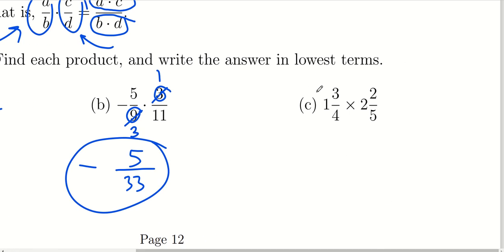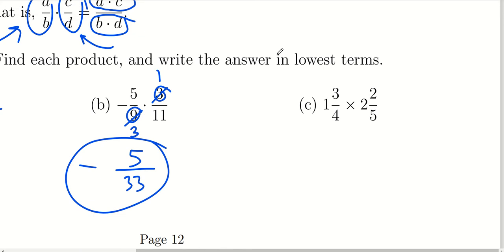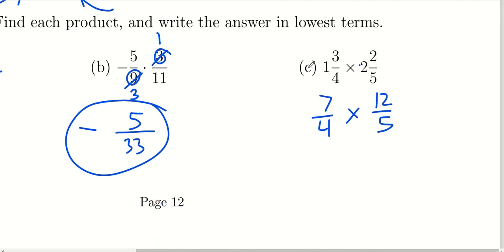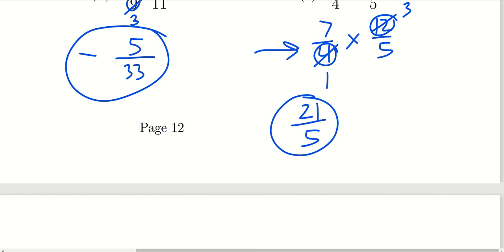Here we have two mixed numbers being multiplied together. To multiply mixed numbers, we change them to improper fractions first. For 1 and 3 fourths, we do 1 times 4 plus 3, giving 7 over 4. For 2 and 2 fifths, we do 2 times 5 plus 2, giving 12 over 5. Now we can reduce: 4 goes into itself once, and 4 goes into 12 three times. Multiplying: 7 times 3 is 21, and 1 times 5 is 5. As long as you reduce before multiplying, your final answer will come out in reduced form.